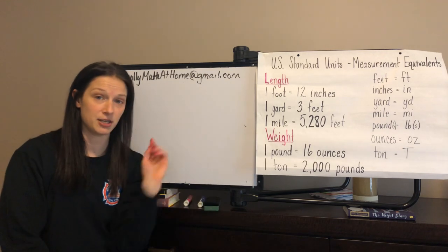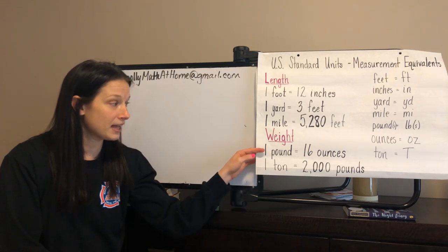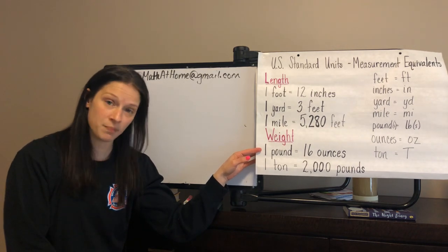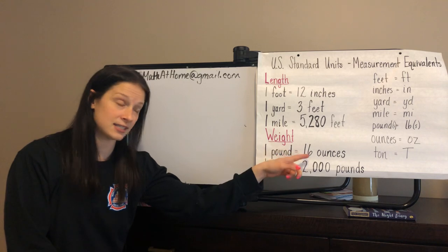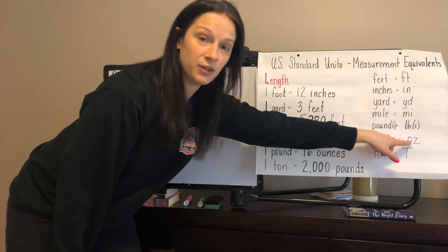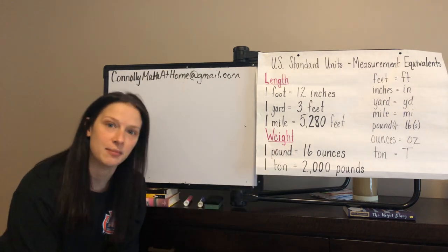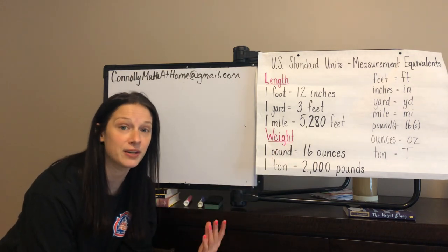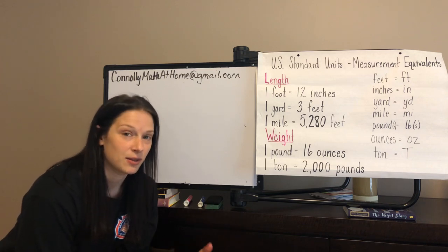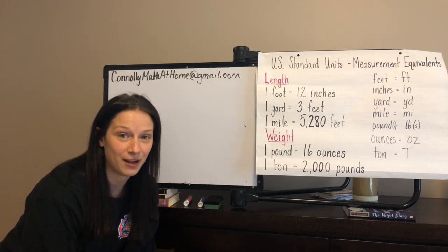The other measurements I'm going to talk about today are weight — I'll cover capacity in another video. When we talk about weight, the doctor's going to give you a weight in pounds. One pound is the same as 16 ounces. If you look at a can of soup, you're going to see OZ — that's ounces. When babies are born, people share their weight like 7 pounds 6 ounces, or 8 pounds 15 ounces. So I just want you to be familiar with it.